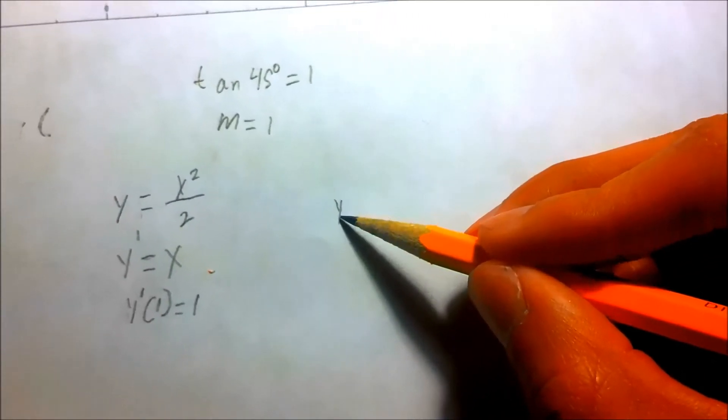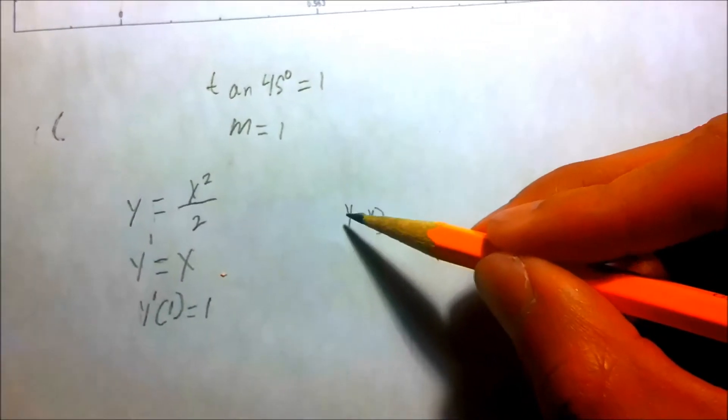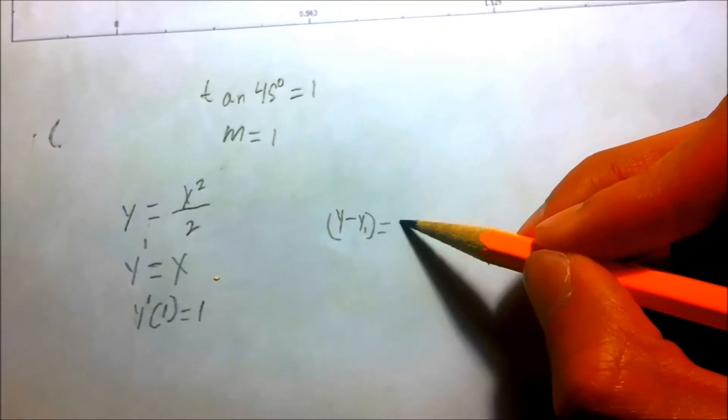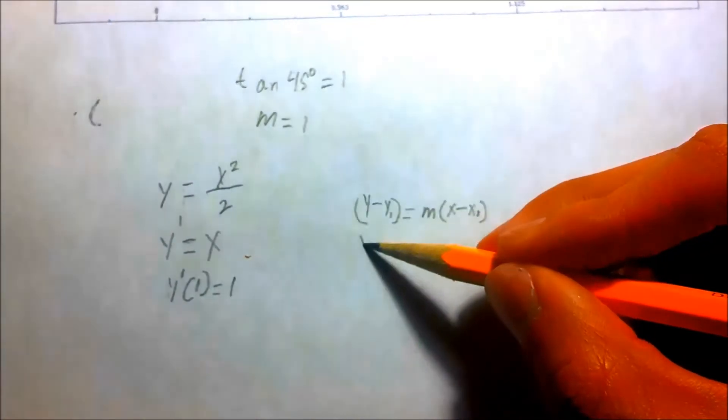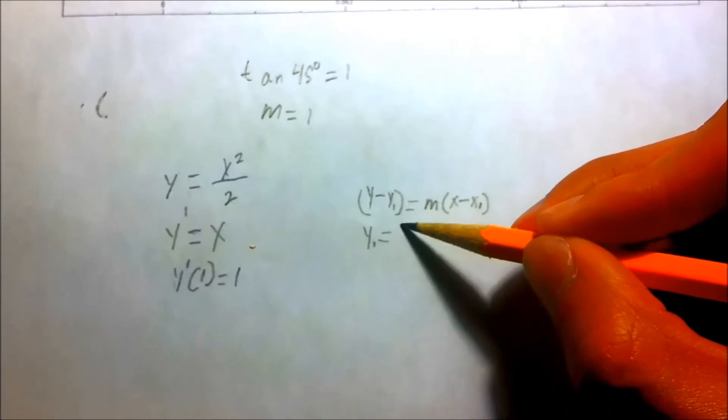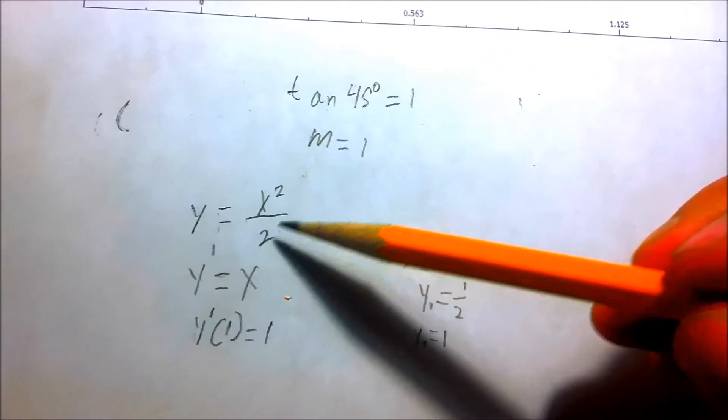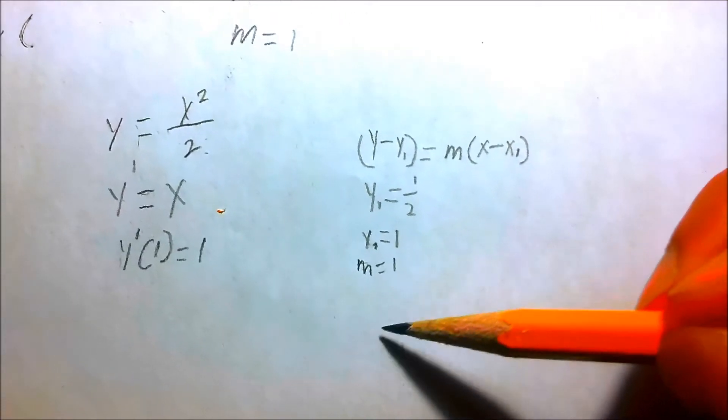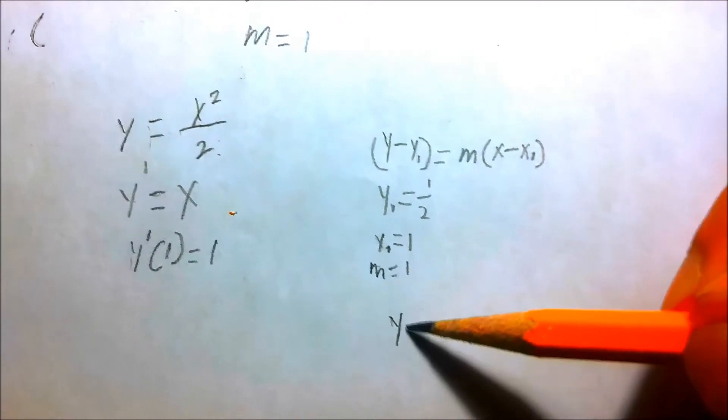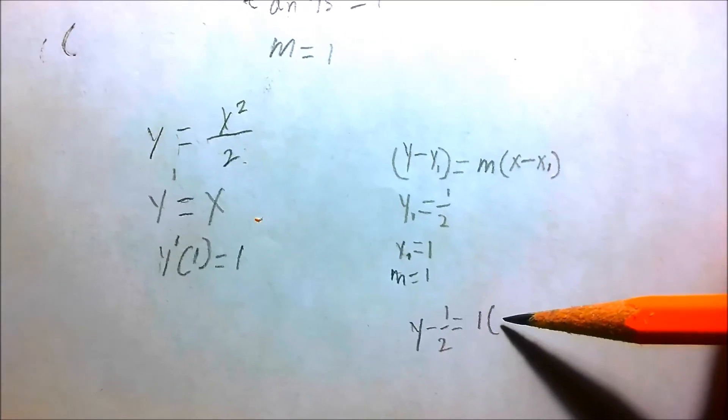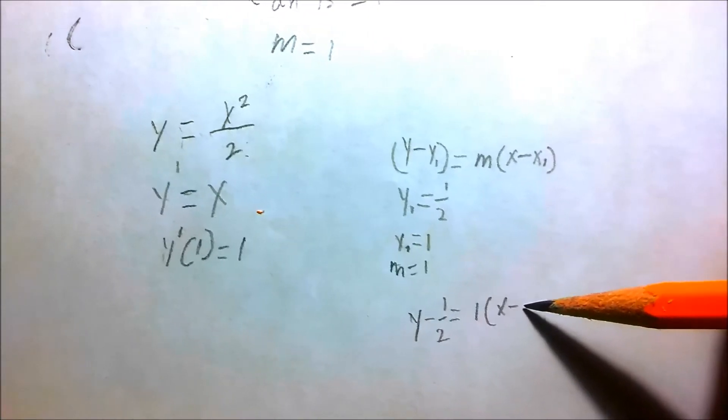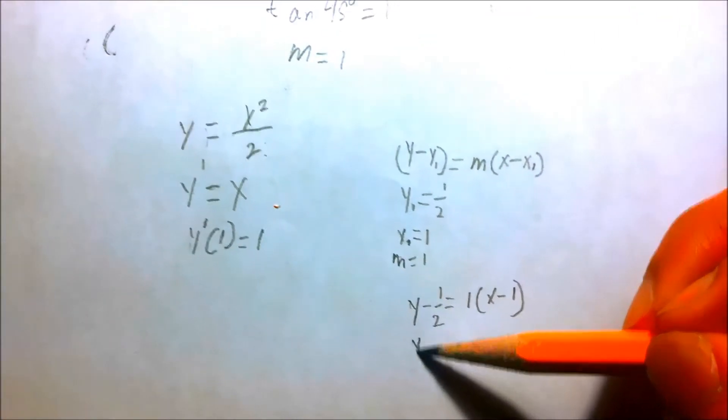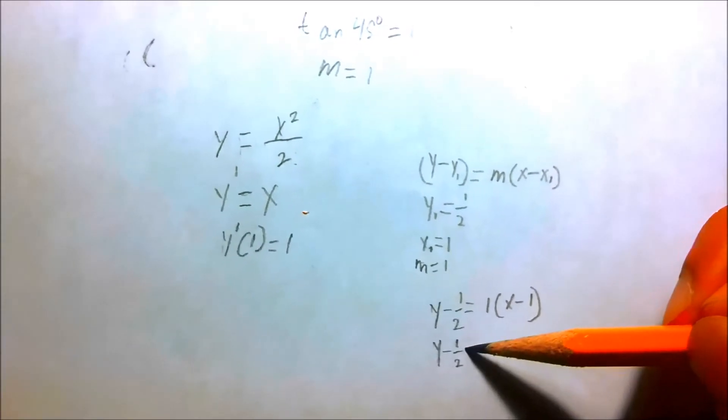And now we can even find the equation of that line. If we use the point slope form: y minus y1 equals m times x minus x sub 1. And here we have y sub 1 equals 1 half, and x sub 1 equals 1. Because when we plug in 1 to this function here, you get 1 half. So let's plug that in. And m, as we know, equals 1.